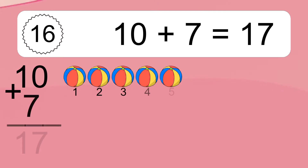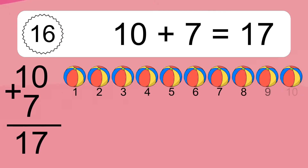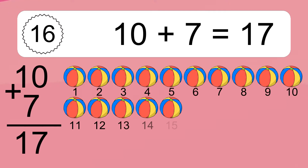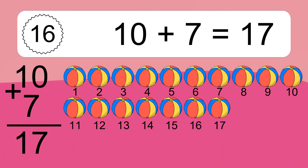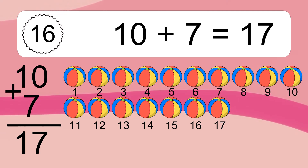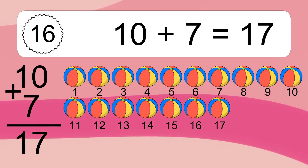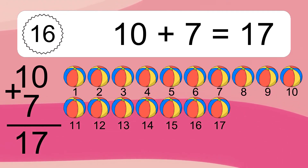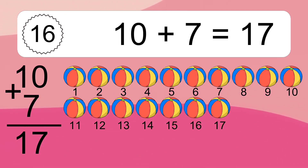10 plus 7 equals what? 10 plus 7 equals 17. Let's count it. 1, 2, 3, 4, 5, 6, 7, 8, 9, 10, 11, 12, 13, 14, 15, 16, 17.